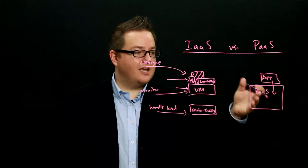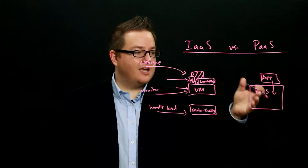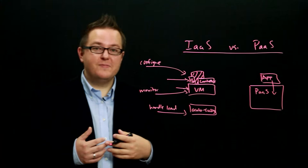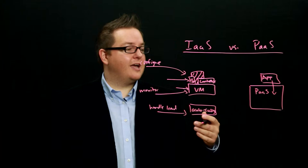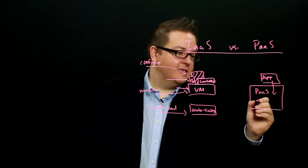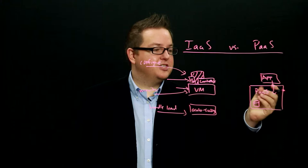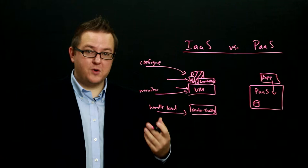PaaS can also give you tools tightly coupled to the platform — for example, collecting request logs across all the machines running your application so you can look across a thousand machines and see incoming requests and what they're logging. Or you can look at the performance of how your application is interacting with the database the PaaS system created, because they provide you tools to give you those metrics. So with PaaS, all the management infrastructure is provided and built for you.